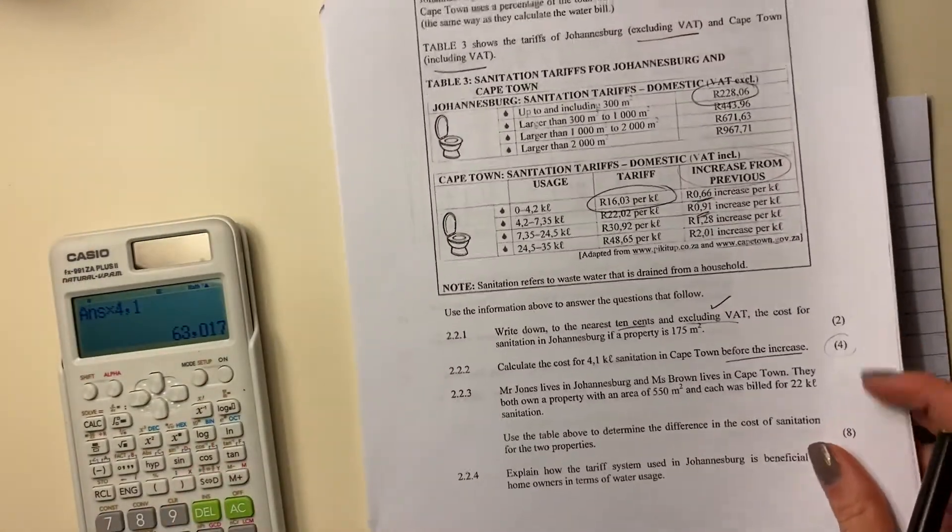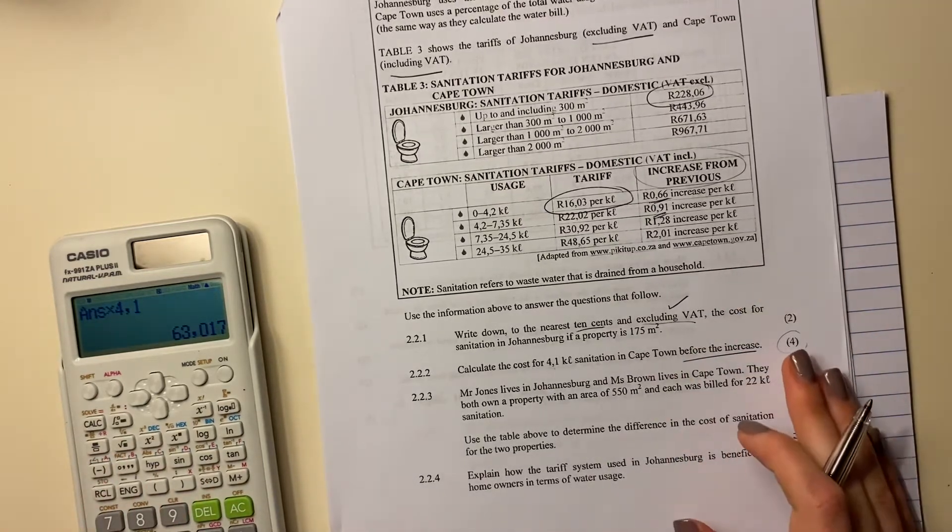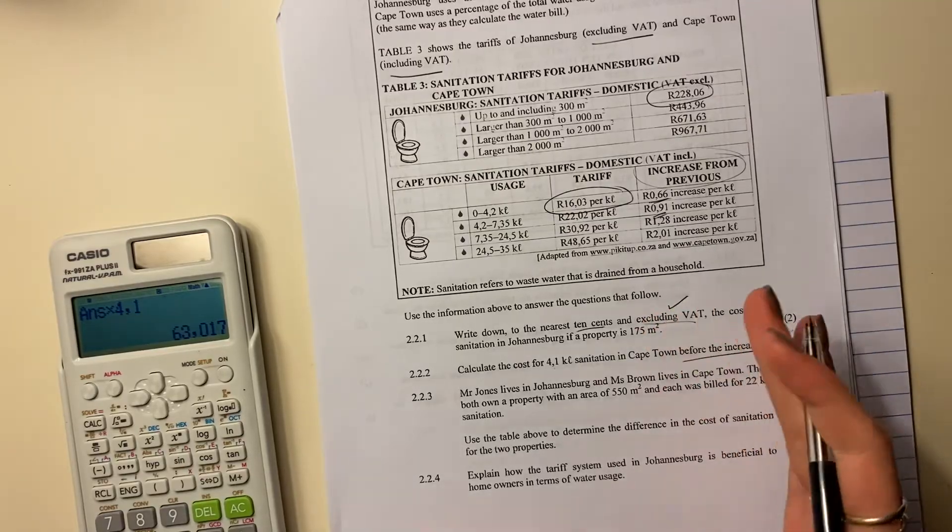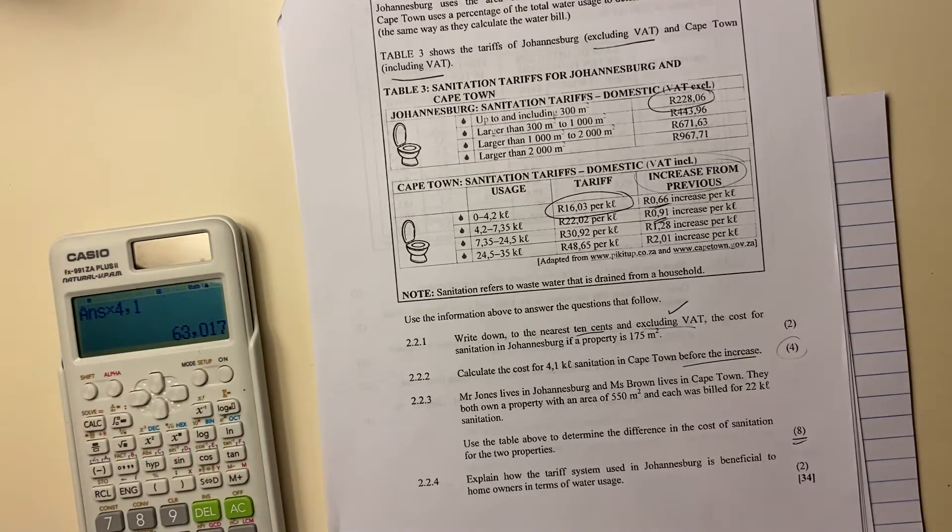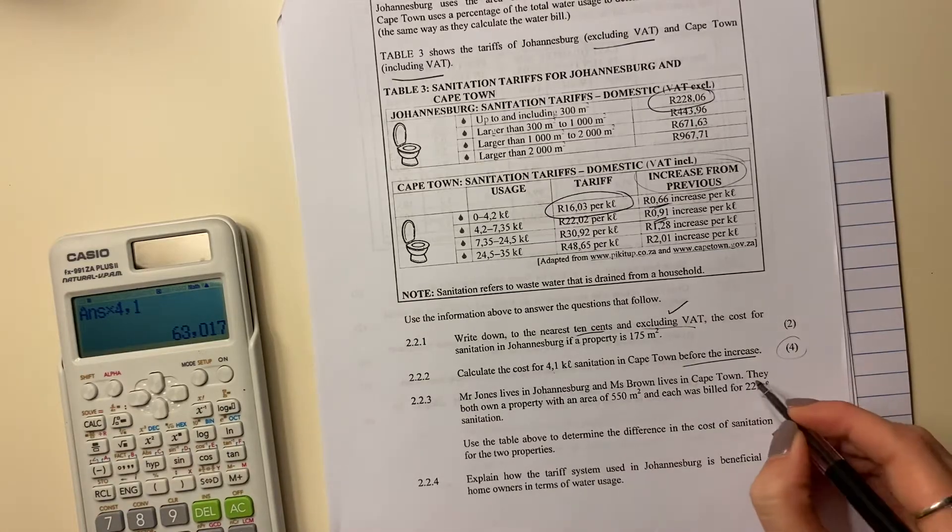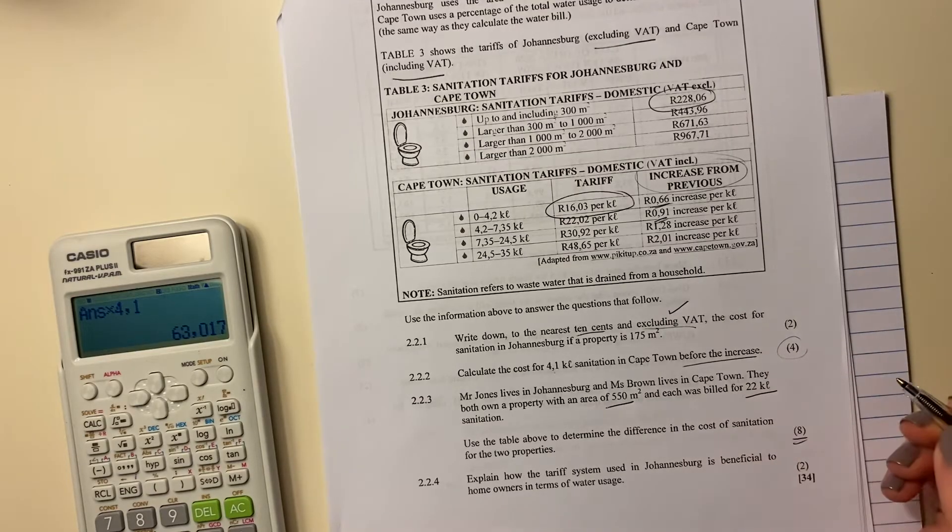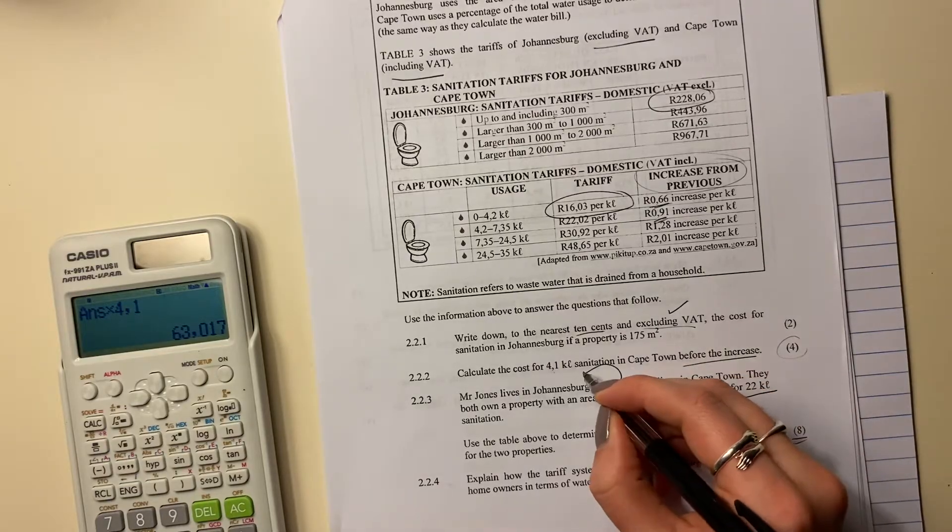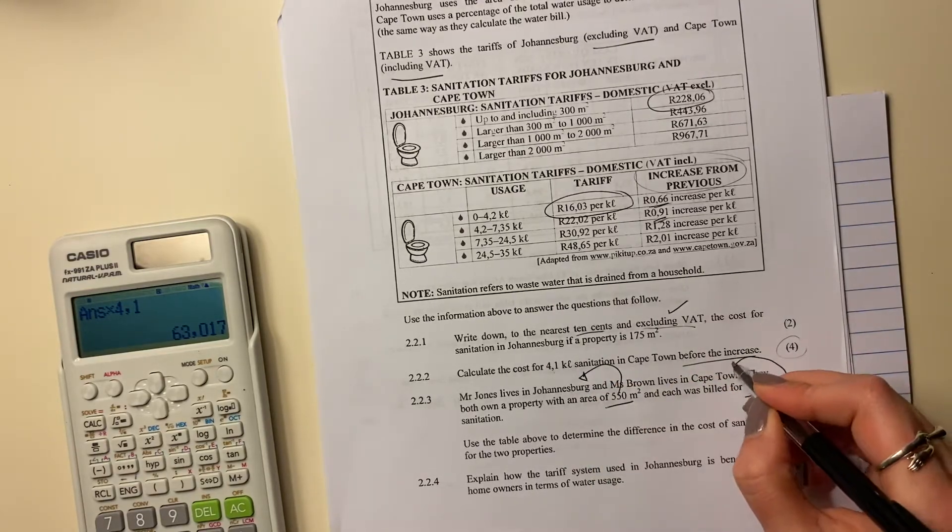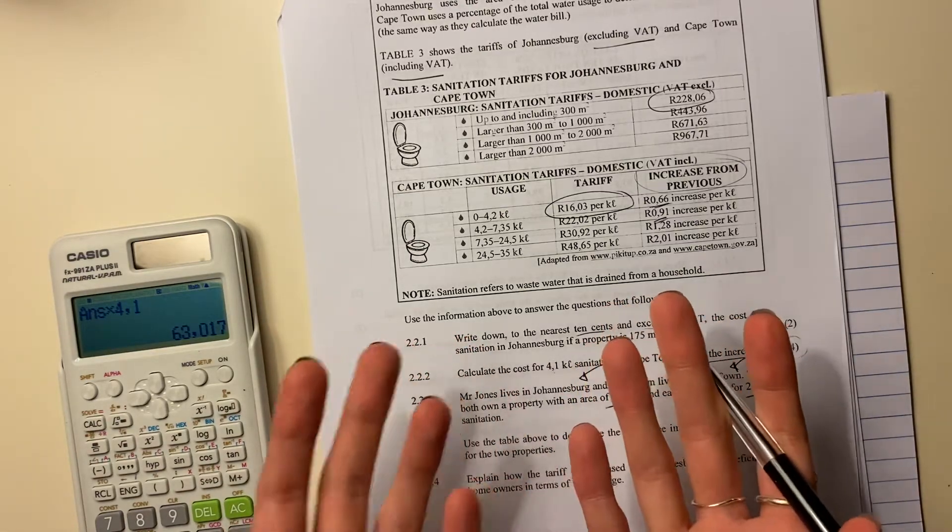Let's now move on to the next question. So the next question is a big question - we can see that it's eight marks, but actually a really interesting question and a really good question to see whether you understand the mechanism that's being presented. It says Mr. Jones lives in Johannesburg and Ms. Brown lives in Cape Town. They both own a property with an area of this and each has billed for 22 kiloliters. Why is it important to have both of those? Because we know that in Johannesburg, we're going to be looking at area and in Cape Town, we're going to be looking at kiloliters. So it's important to have both those pieces of information in order to actually calculate the sanitation bill.